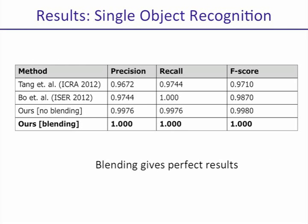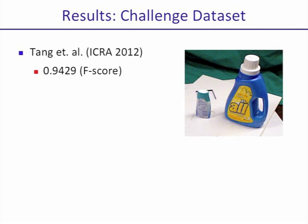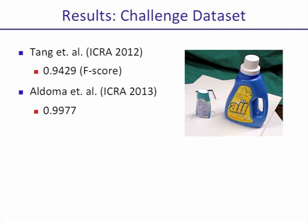We first consider a single object recognition test, where there is only a single object in each scene. Note that our blending approach gives perfect performance on this task. We then move on to the challenge dataset, which was one of two datasets introduced as part of the 2011 Solutions in Perception challenge held at ICRA. Tang et al., who were the winners of the challenge, obtained an F-score of 0.9429. Domo et al. recently brought this up to 0.9977. Our approach achieves 0.9988. This dataset is more or less saturated, mostly due to the lack of occlusions in the test scene.